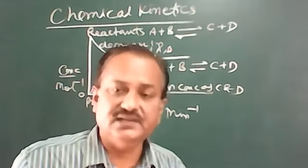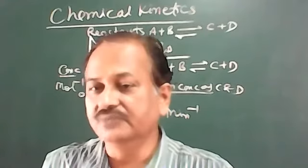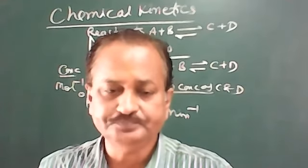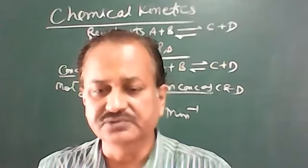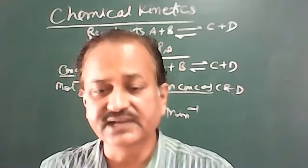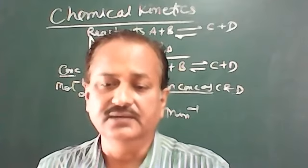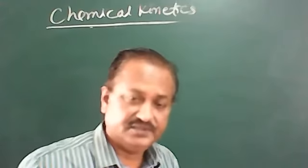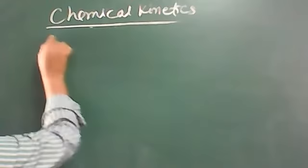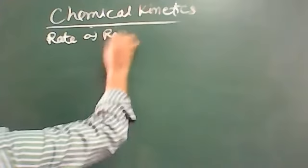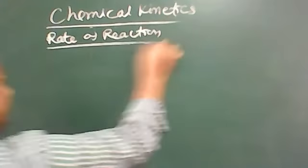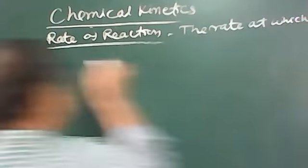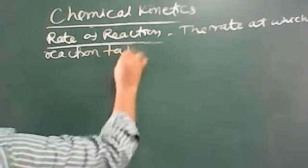So this is the meaning of chemical kinetics — kinetics involves the change in the reaction, and we have to point out the different conditions. Chemical kinetics involves the rate of reaction. Rate of reaction simply means the rate at which a reaction takes place.